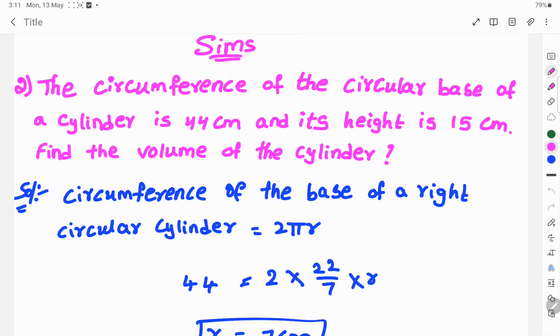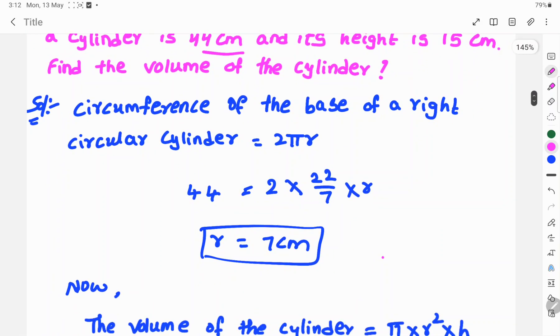Let's see the solution. The circumference of the base of a right circular cylinder is 2πr. Here the given circumference is 44 cm, so 44 equals 2 times π, which is 22/7, times r. We need to find the radius first.